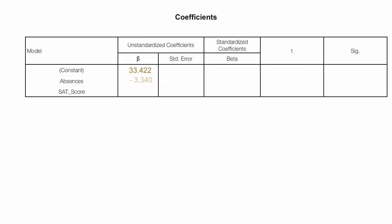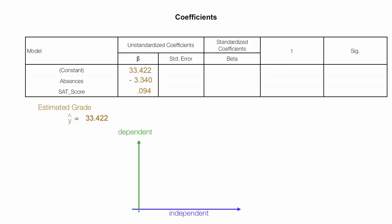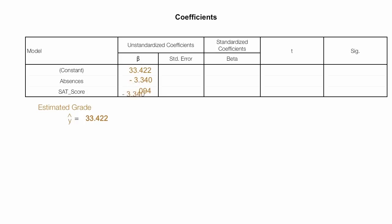The first set of values — the betas, shown in brown — are the regression equation, noted by B0, B1, and B2. My regression equation is: y-hat, which is my estimated grade, equals 33.422 (that's my constant, or y-intercept), minus 3.340 times the number of absences, plus 0.094 times the SAT score.